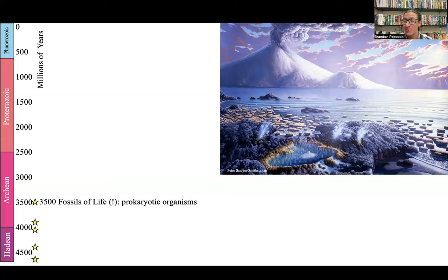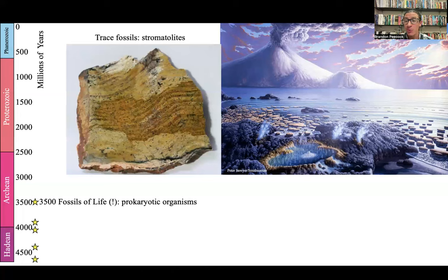What we can say in this class, because we're focused on fossils, is that 3.5 billion years ago there is absolutely evidence of life living on this planet. There are trace fossils that are some of the best first evidence we had of ancient life — and these are stromatolites, evidence of layers of single-celled organisms living their lives, getting covered in sediment, wriggling up again, getting covered in sediment again. These layers preserve their habitats.